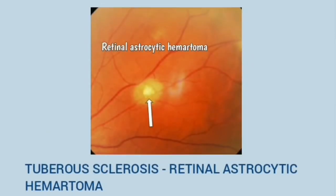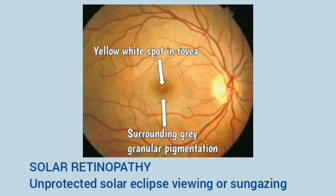This is a fundus image showing a retinal astrocytic hamartoma in a case of tuberous sclerosis. This is solar retinopathy, due to unprotected solar eclipse viewing or sun gazing. You can see the yellow-white spot in the center of the fovea and the surrounding gray granular pigmentation.